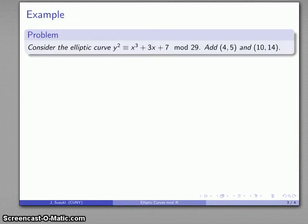For example, let's consider our elliptic curve, y² equals x³ plus 3x plus 7, mod 29, and it turns out that two points on the curve are (4, 5) and (10, 14). So we have these two points on our elliptic curve, and the points are distinct, so we can find the slope between them.